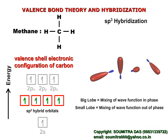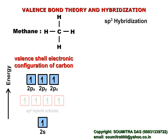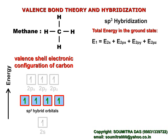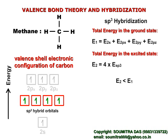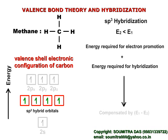You will learn more about the mixing of wave functions in phase and out of phase when you study molecular orbital theory. Now, regarding the energy required to promote the electron to a higher energy level and the energy required to hybridize the orbitals — where does all this energy come from? Let the sum of energies of the electrons at ground state be E1, and the sum of energies after hybridization be E2. Now E2 is less than E1. The energy required for promotion and hybridization is more than compensated by the difference E1 minus E2.